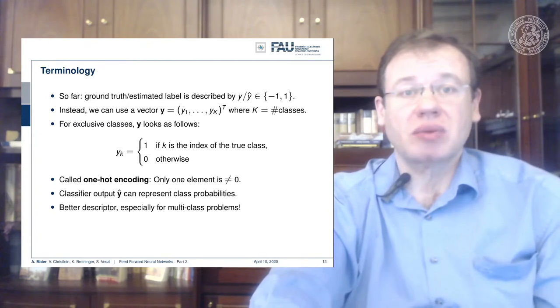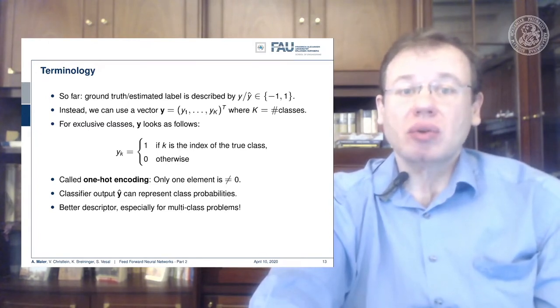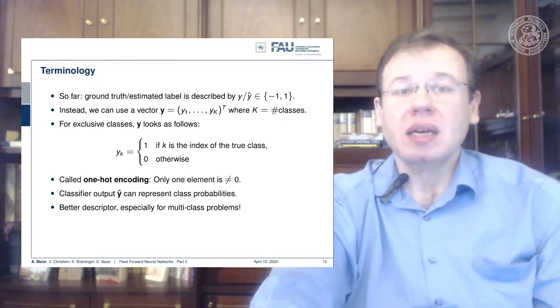But if you want to classify multiple classes, you want an output vector that doesn't show any pictures. It has essentially one dimension per class k, where capital K is the number of classes.